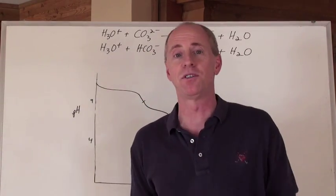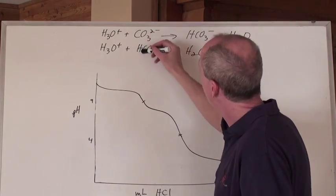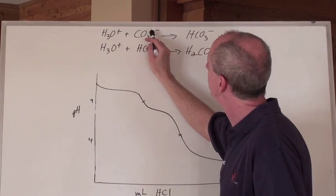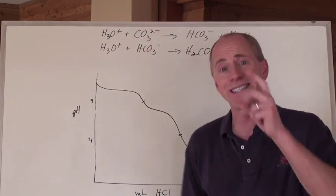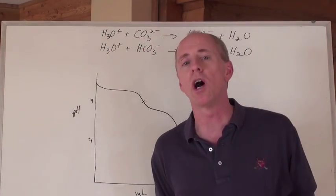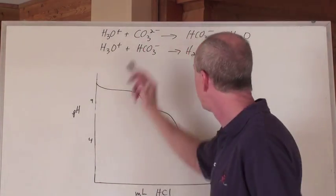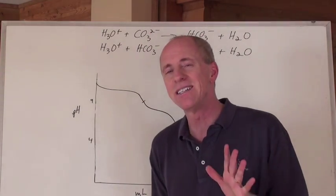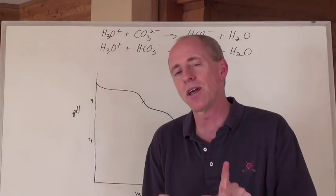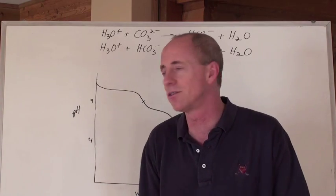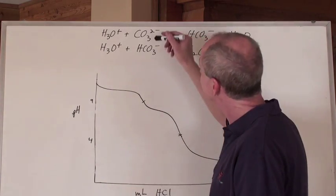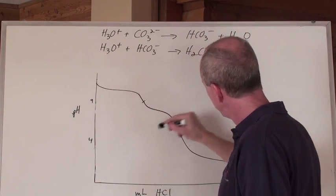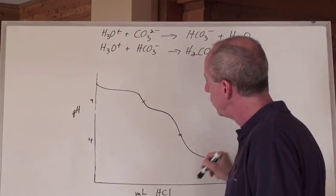Two bumps, because there are two equations, because hydronium is added to a chemical that can take two protons. If it could take three protons, you might have three bumps, although we'll talk about that — it's not usually going to be the case. The key point: you've got a species with two negative charges, and you're going to be able to give it two protons.